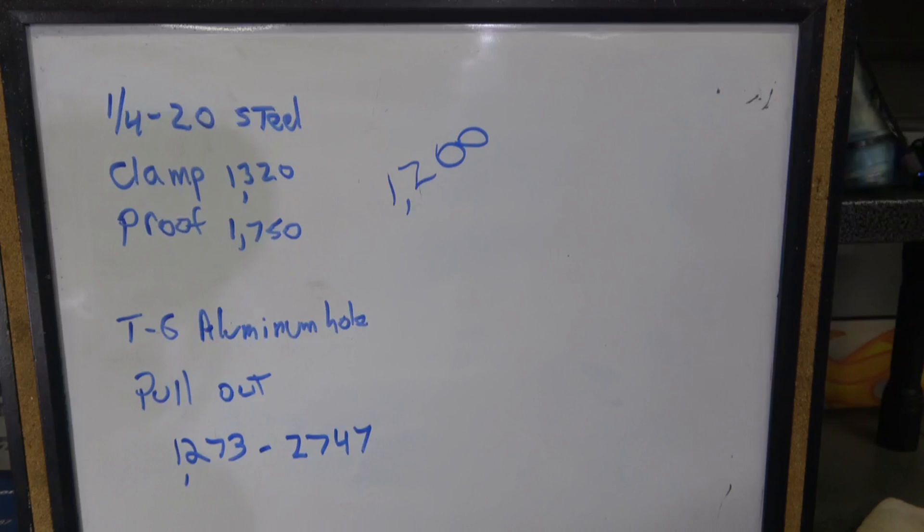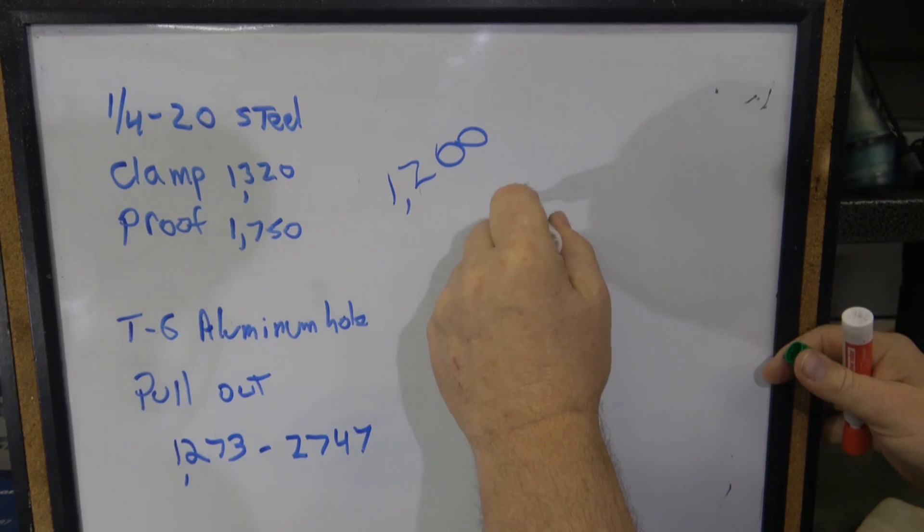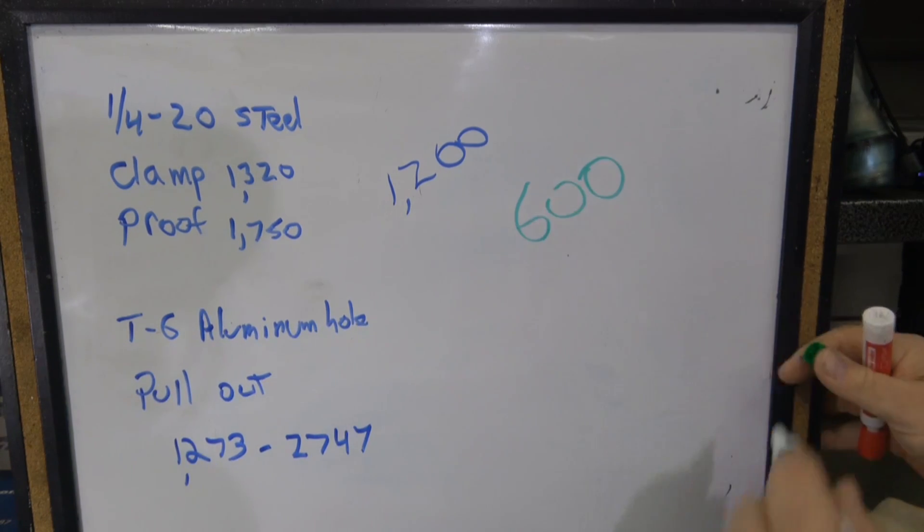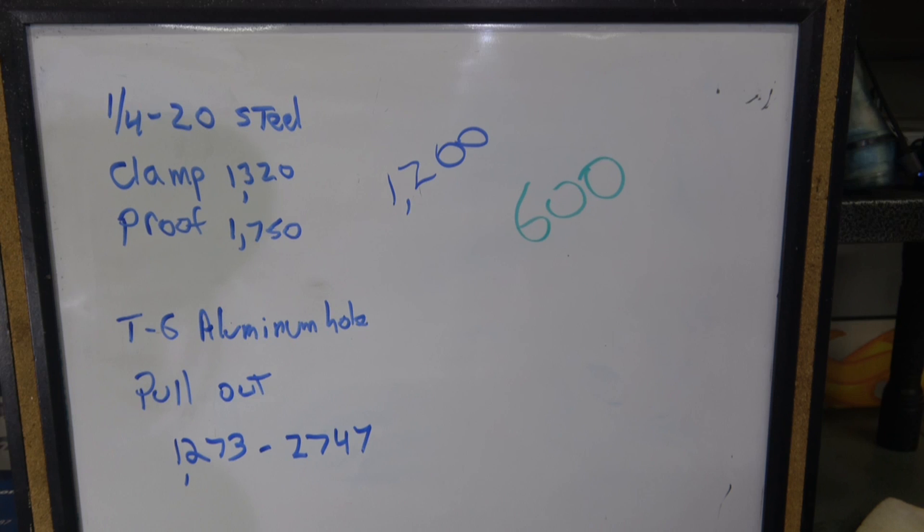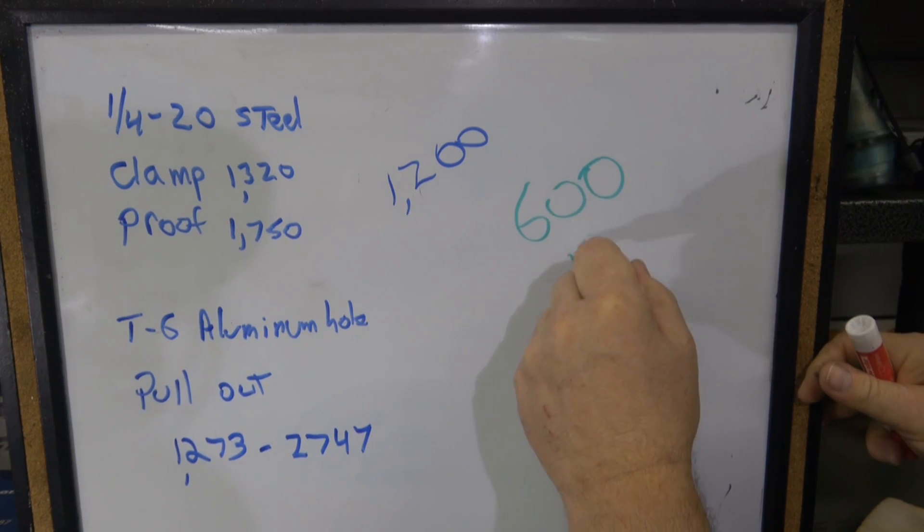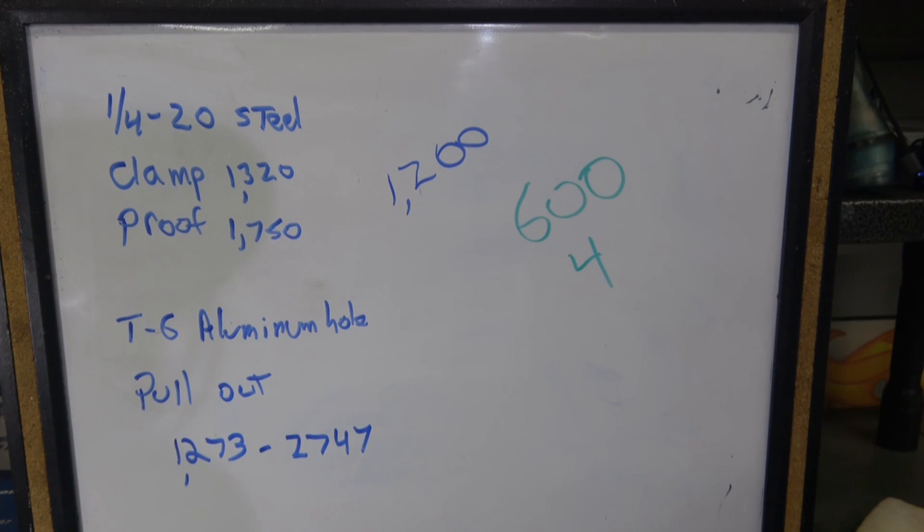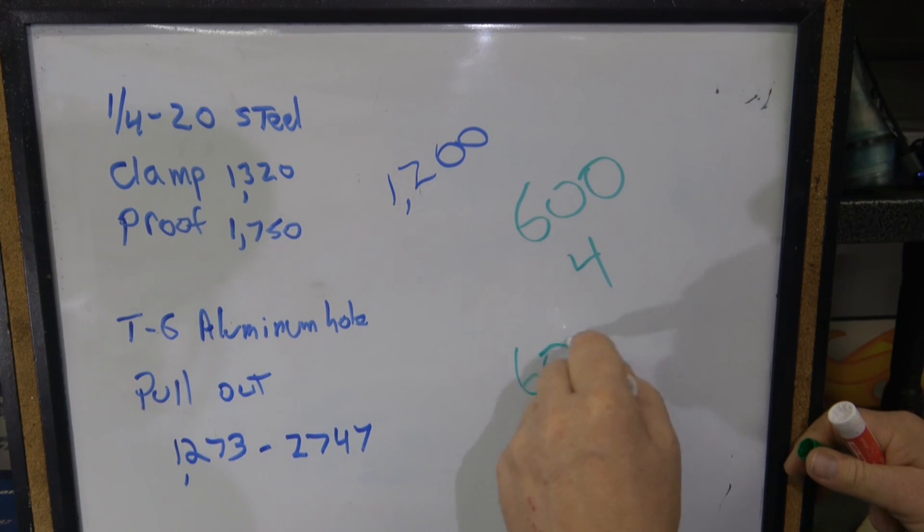Now there's something to remember. The engine only weighs about 600 pounds. And there are 4 studs in each one of those, 4 studs for the carb. If you take 600 and divide it by 4, what do we get? 150.